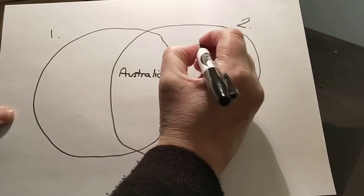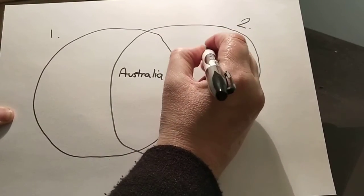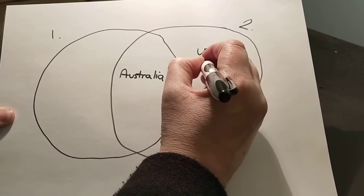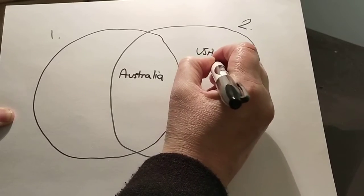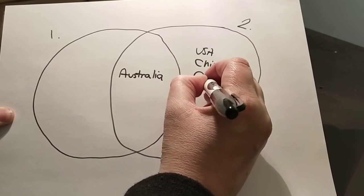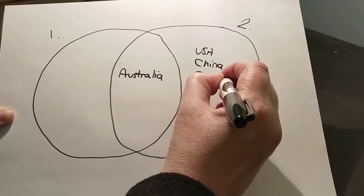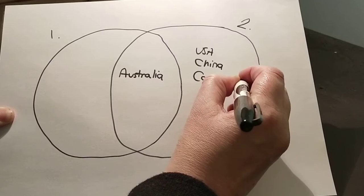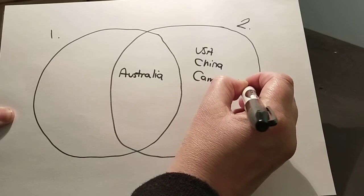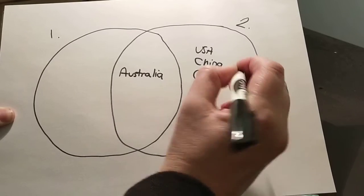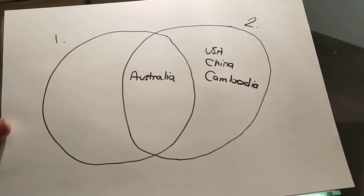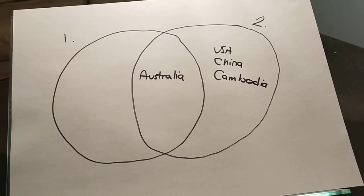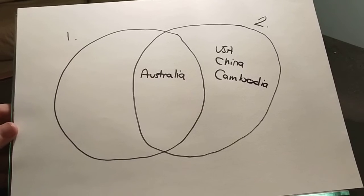I've lived in some other countries but I don't have citizenship in them, so those other countries will go over here in the geographic circle. I have the USA, China, and Cambodia over here. These are not just countries I've visited — these are countries I've lived in. I've had a house there, I've had my stuff there, I've done my daily life there for a significant period of time.